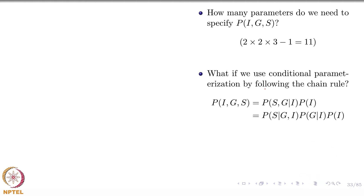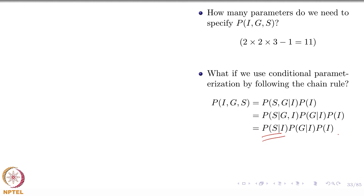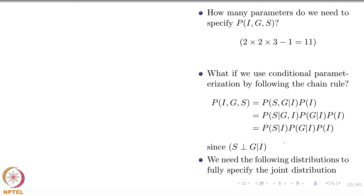Because of the conditional independence assumption, P(G|I, S) simplifies to P(G|I). How many parameters do you need? 1 for P(I), 2 for P(S|I) — since each row sums to 1 — but wait, grade has 3 values so P(G|I) needs more. The total after simplification is 1 + 2 + 4 = 7 parameters, down from 11.